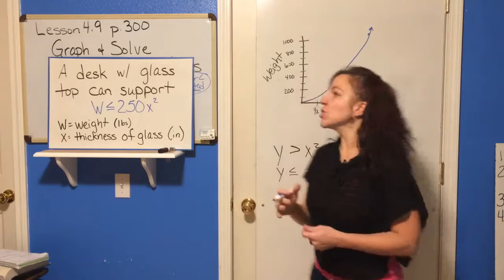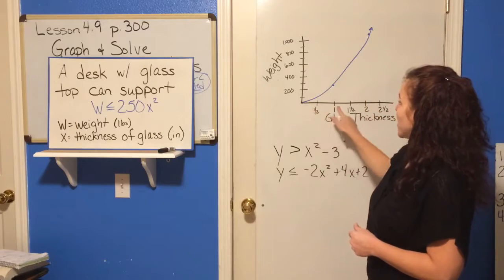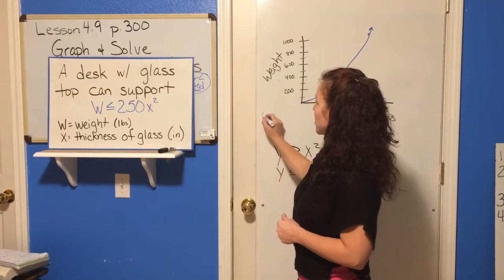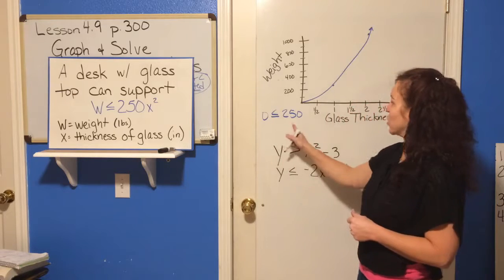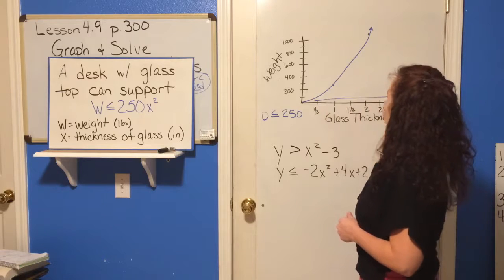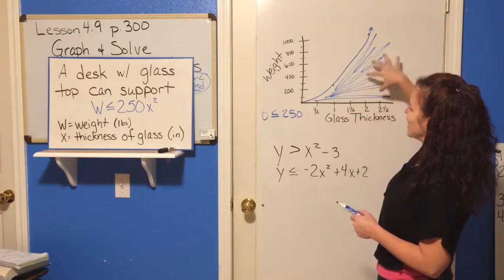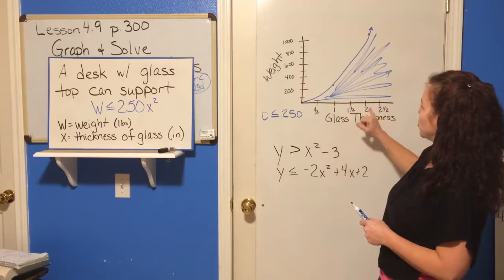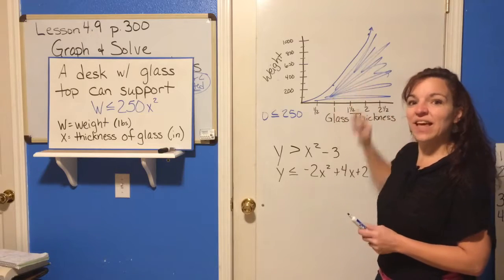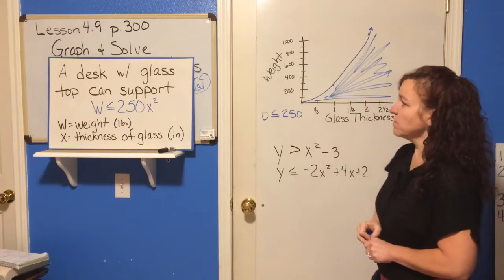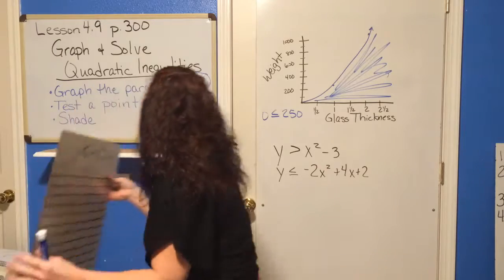The last step is to determine which side to shade. Testing the point (1, 0): is 0 less than or equal to 250 times 1 squared? Yes, 0 is less than 250, so we shade inside the parabola. This means any combination of glass thickness and weight that falls inside this region — for example, two inches of glass supporting 100, 200, or 300 pounds — is a valid solution.